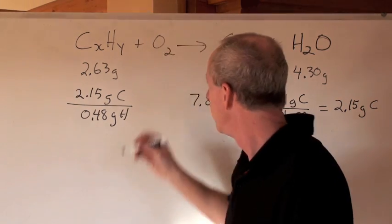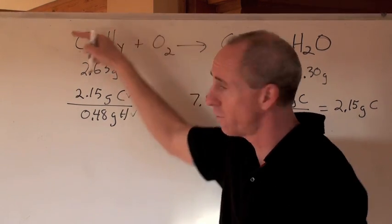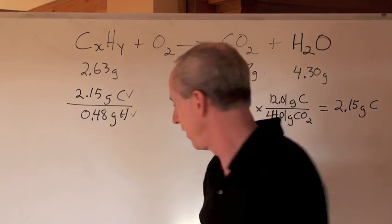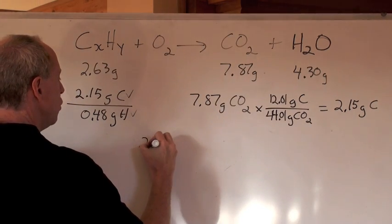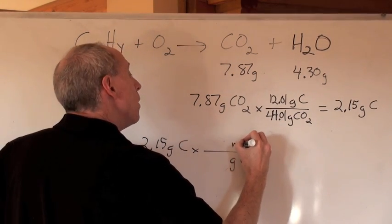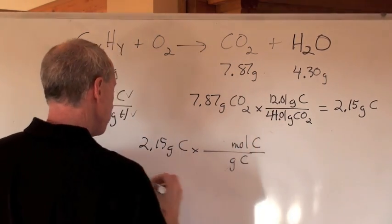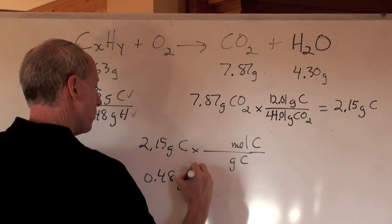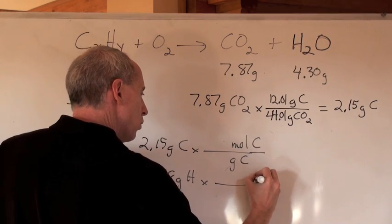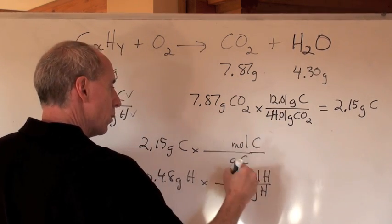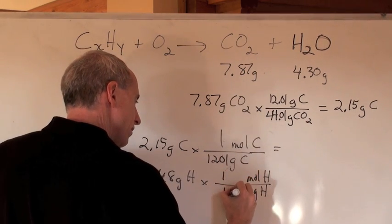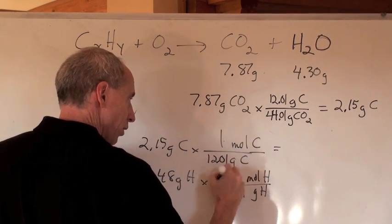Now, what have you got? You know the grams of the carbon and the grams of the hydrogen that are found here. How do you find the empirical formula? Take the masses that you've got. So it's 2.15 grams of carbon. You don't want grams of carbon. You want moles of carbon. You take the 0.48 grams of hydrogen. You don't want grams of hydrogen. You want moles of hydrogen. What are the molar masses here? 12.01 grams per mole and 1.01 grams per one mole.